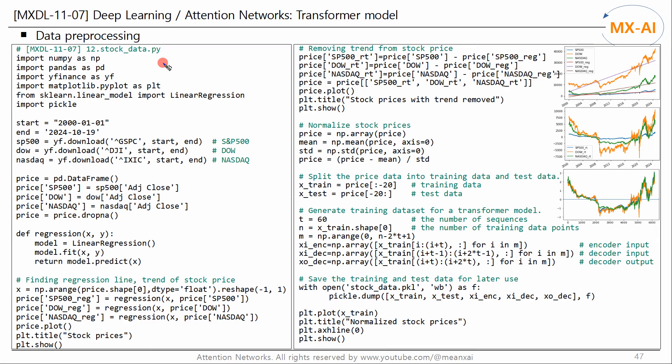Now let's write code to pre-process the stock prices data. First, let's get historical stock data for the S&P 500, Dow, and NASDAQ from Yahoo Finance. This data includes the open, high, low, close, and adjusted close prices. We will only use the adjusted close price.